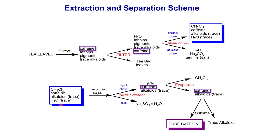Coming back to the separation scheme: we have the organic layer containing dichloromethane, caffeine, and other alkaloids. We add anhydrous sodium sulfate to remove traces of water. The sodium sulfate forms a solid hydrated salt, removing water from the organic phase, giving us a dry organic layer. We can then filter or decant out the dry organic solution.